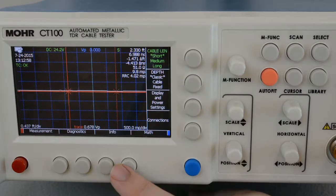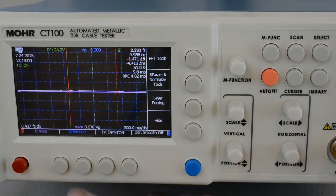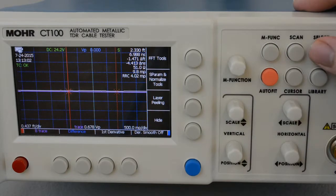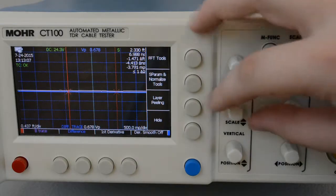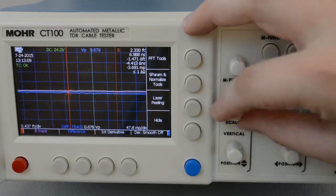I'm going to go to math, set the scan as the base, select the live trace, and press difference. Now we've got this difference line. Let's zoom in and see what we can find.